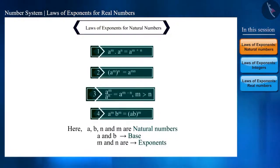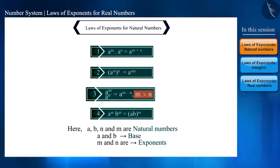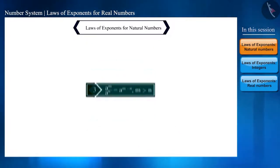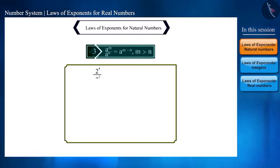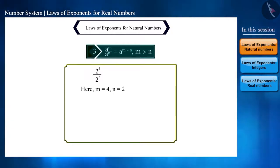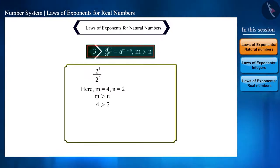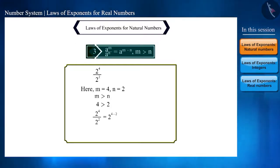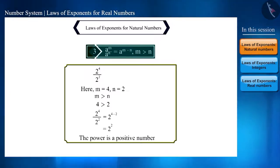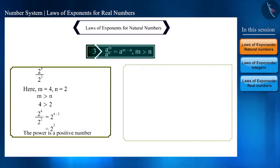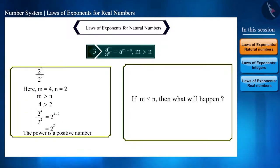Notice the third rule — there is a condition here: m must be greater than n. For example, 2 raised to the power 4 divided by 2 raised to the power 2, where m equals 4 and n equals 2, so m is greater than n. Applying this rule gives 2 raised to the power 4 minus 2, which is 2 raised to the power 2 — a positive number.